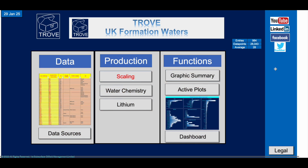The database we have at the minute is largely based on the UK, the United Kingdom, so lots of North Sea examples in here. We've got something in the region of 984 entries, about 28,000 data points — that's about 28 data points on average for every entry. So lots of information about different waters.